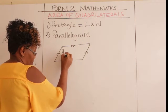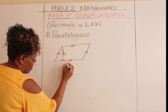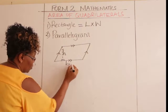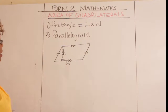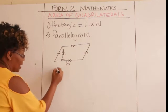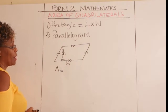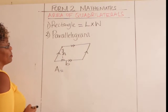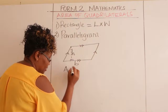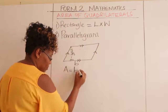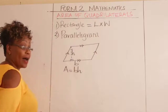A parallelogram has a height here, and this is the base — we can call it B. The area of a parallelogram is base times the perpendicular height.